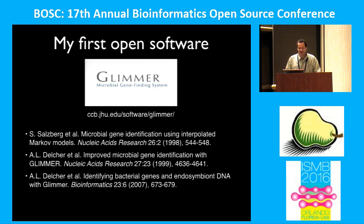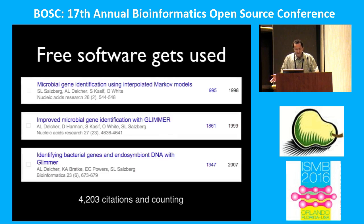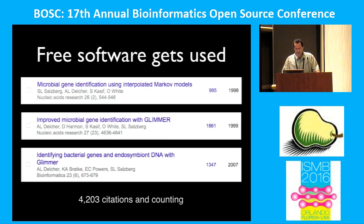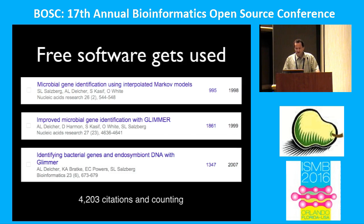One benefit of open source, besides the fact you no longer have to talk to lawyers — which in my view was a big benefit — is that it gets used. It's much easier for people to use it; they don't have to work on a license. These are the citation counts from Google Scholar for the Glimmer software over the years. It's been cited over 4,000 times across three papers, and that's what we wanted. That's the form of payment we get. If you're using someone else's open source software, make sure you cite it in your papers, because that's kind of the only reward we get.